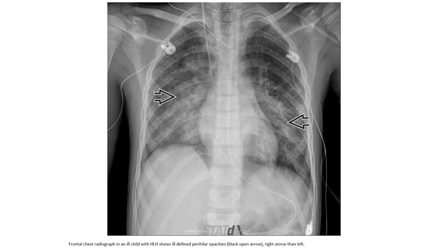Chest radiograph in an ill child with HLH shows ill-defined perihilar opacities, right worse than left.